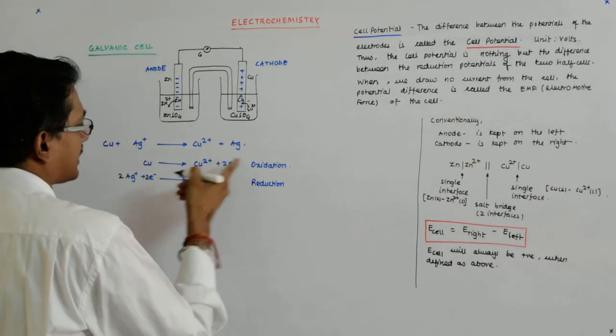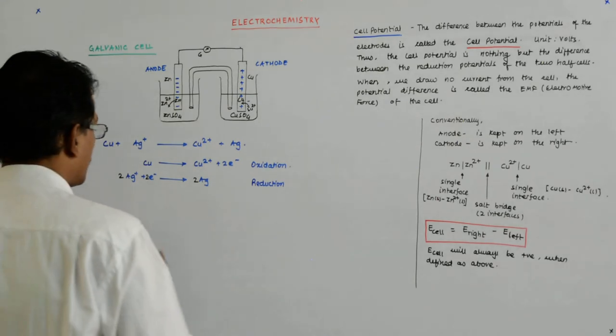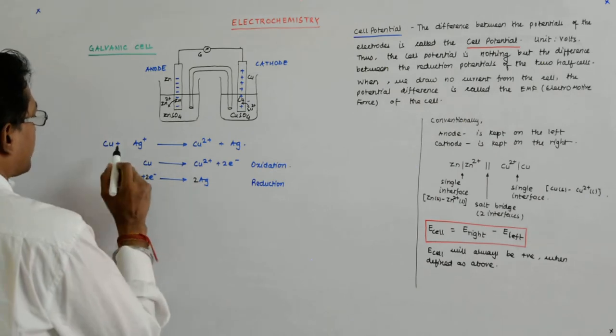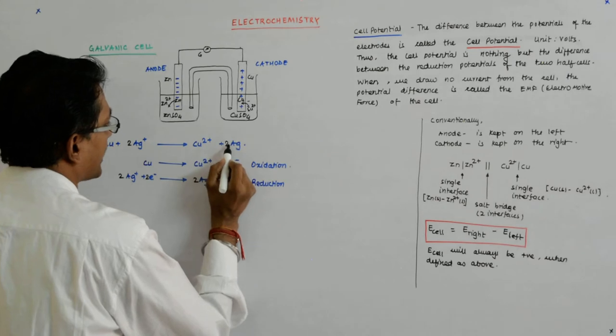I'll have to multiply this by 2, so that when I add, the electrons cancel. It should have been 2Ag⁺ and here it should have been 2Ag.